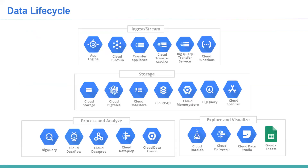Let's discuss the data lifecycle. A typical data lifecycle, whether it's GCP, AWS, Azure, or even on-premise, follows a certain set of patterns. The first step is ingestion, where we collect data from different sources and put it somewhere in the data lake. If you're using on-premise, you'll use HDFS. If you're using Google Cloud, you'll use Google Cloud Storage. You can also use BigQuery, Cloud Spanner, and other storage options.